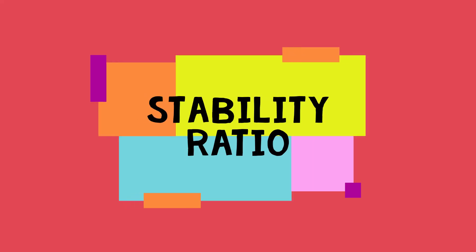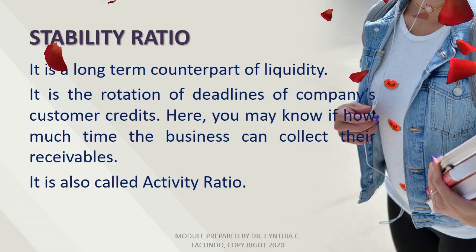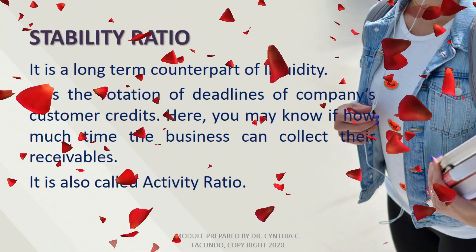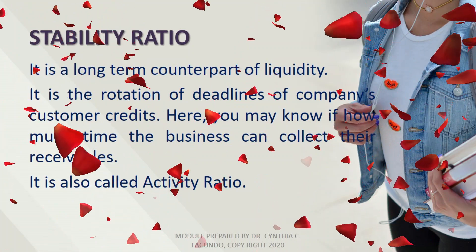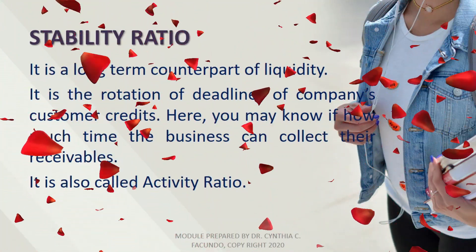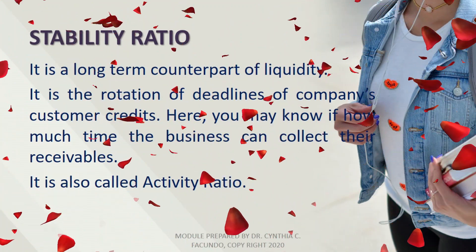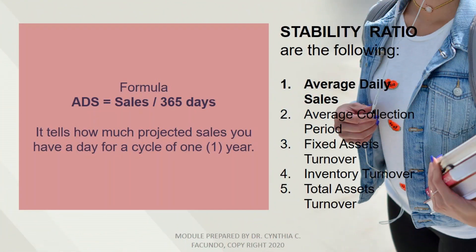Then we have the stability ratio. Stability ratio is the long-term counterpart of liquidity. It is the rotation of deadlines of a company's customer credits, allowing you to know how much time the business can collect receivables. It is also called the activity ratio. Stability ratios include: average daily sales, average collection period, PICS asset turnover, inventory turnover, and total asset turnover.